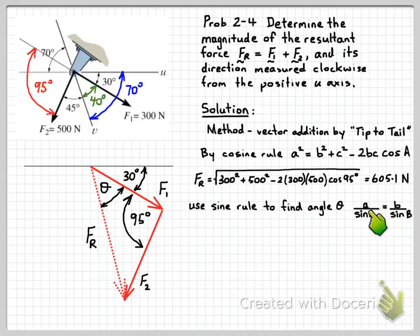We have the sine rule A over sine A equals B over sine B. For the sine rule, we need this angle here, capital A, to be opposite the side little a. On our diagram here, we want to know this angle theta, so the side opposite to that will be F2. The other side angle that we know is this angle here, 95, and we now know the resultant force FR because we just calculated that. So we can substitute all of that into the sine rule.